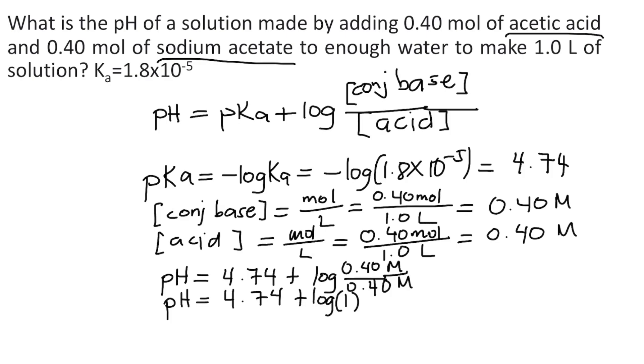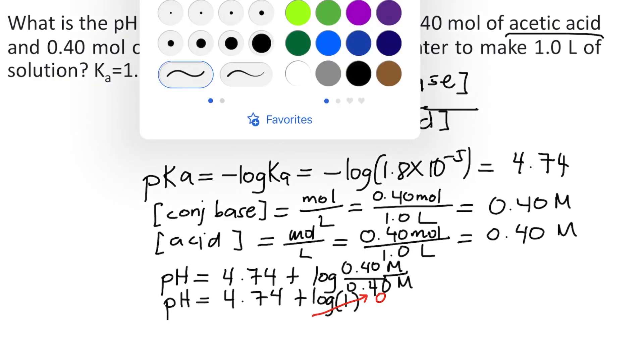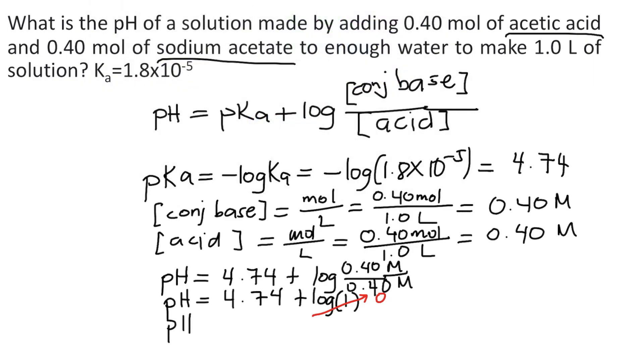And grab your calculator. What is log of 1? Log of 1 is just equal to 0. So the pH is equal to 4.74. So this is the answer to the question.